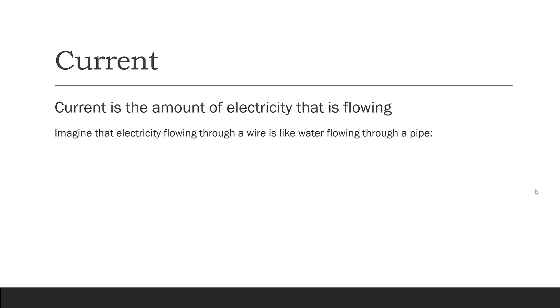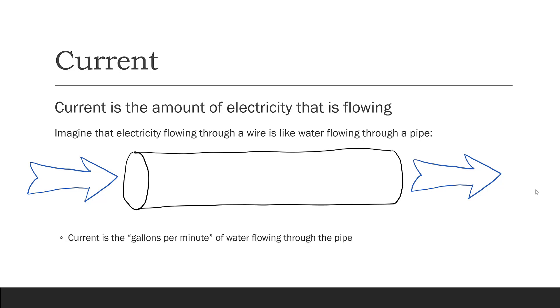The first one we're going to talk about is current. Current is the amount of electricity that is flowing. Imagine that electricity flowing through a wire is kind of like water flowing through a pipe. You've got water coming in at one end and going out the other side. Current would be the gallons per minute of water flowing through this pipe. It's the amount of electricity that's moving, just like the amount of water that's flowing.